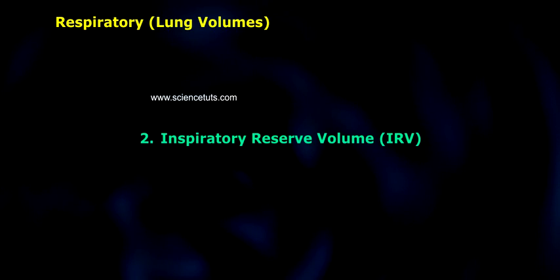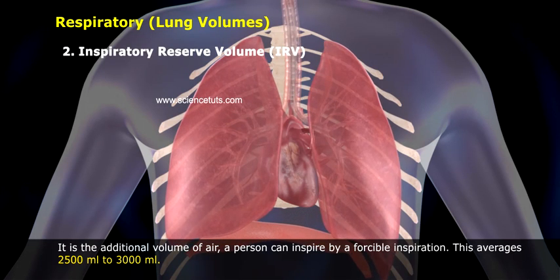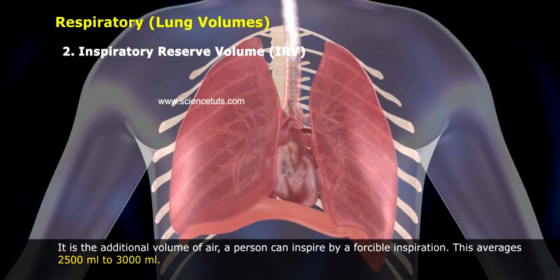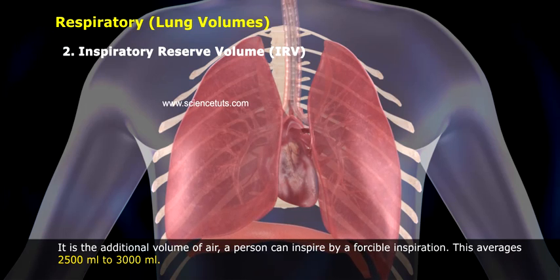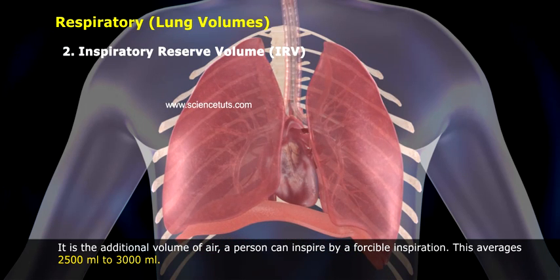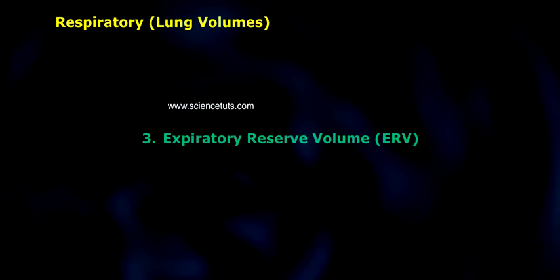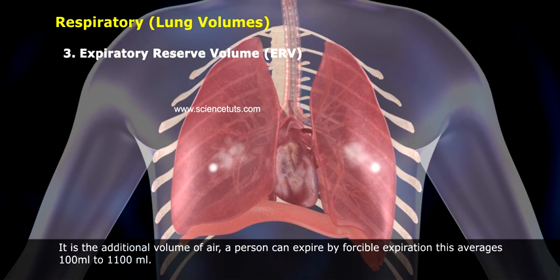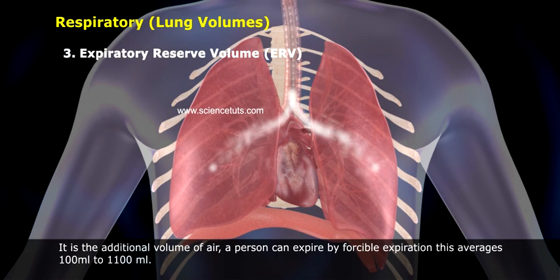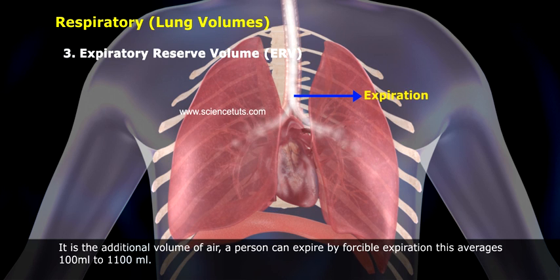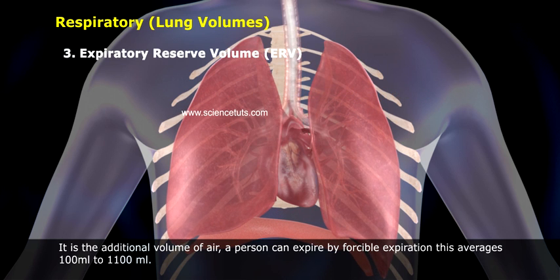2. Inspiratory reserve volume (IRV): It is the additional volume of air a person can inspire by forcible inspiration. This averages 2,500 ml to 3,000 ml. 3. Expiratory reserve volume (ERV): It is the additional volume of air a person can expire by forcible expiration. This averages 1,000 ml to 1,100 ml.